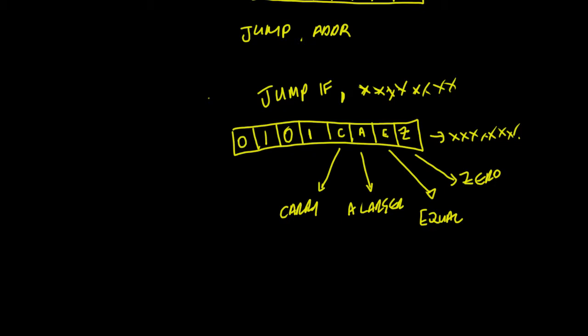The actual instruction code for Jump If is 0101, and the last four bits indicate the condition: it will jump if there's a carry, or if A is larger than B, or if they're equal, or if there's a zero. You could have 15 different variations — you can jump if carry and equals, or carry and larger and zero, etc. We're not going to go through all of those but you'll see all of them in the assembler.